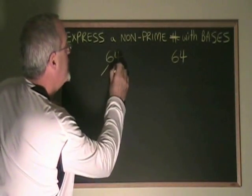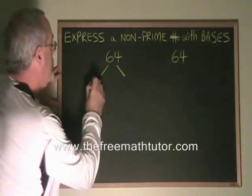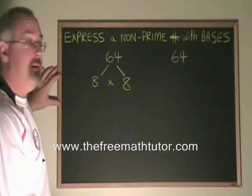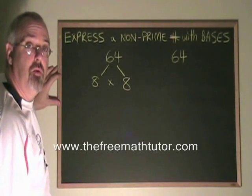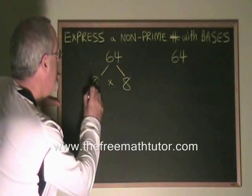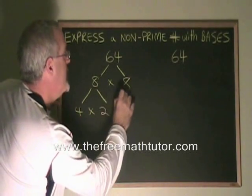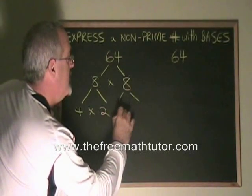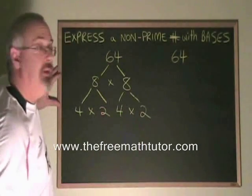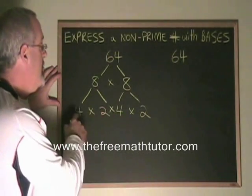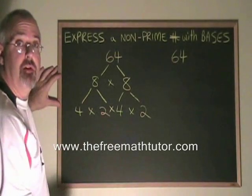64 can be reached when you multiply 8 times 8. But 8 is not prime, so we have to continue factoring. 8 is equal to 4 times 2. So both 8s can be broken down into 4 times 2. The 2s are prime, but the 4s are not, so we're not finished.